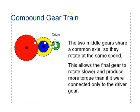So we have to figure out what the gear ratios are of this compound gear train. The two middle gears share a common axle, so they rotate at the same speed. This allows the final gear to rotate slower and produce more torque than if they were connected with only a driver gear. So the driver is in control of how fast everything is turning.